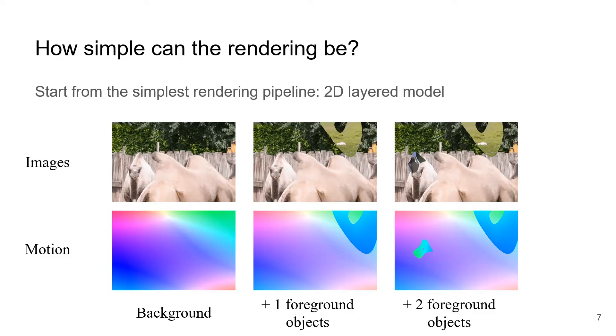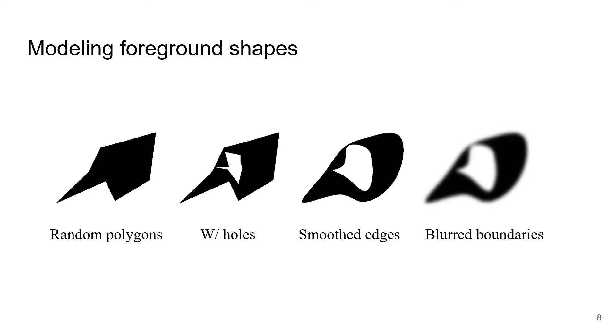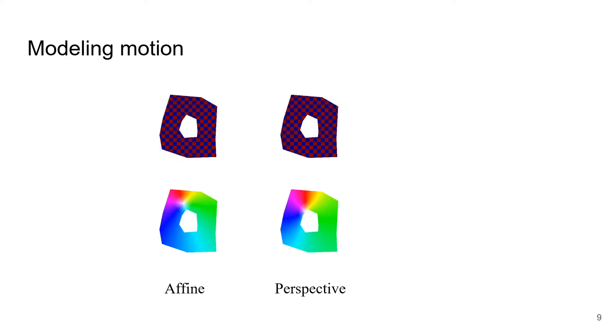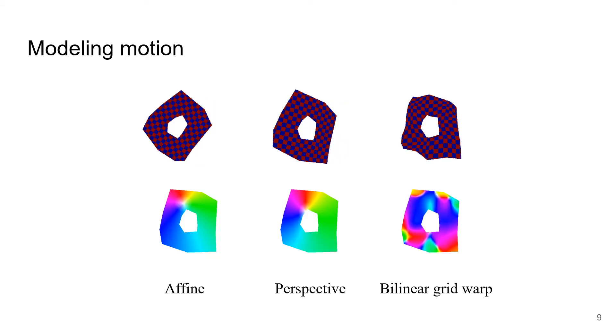To model the foreground shapes, we start with random polygons and have the options to add holes, make edges smooth, and add motion blur. To model motion, we have the option to add affine transformations, perspective transformations, and a more flexible bilinear grid warp, or a combination of all three effects.